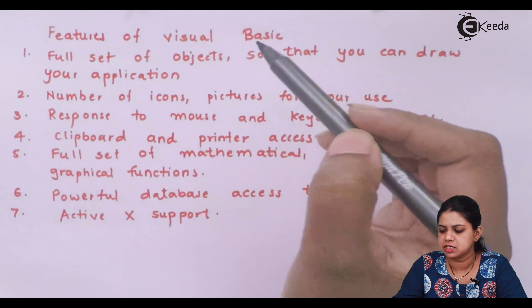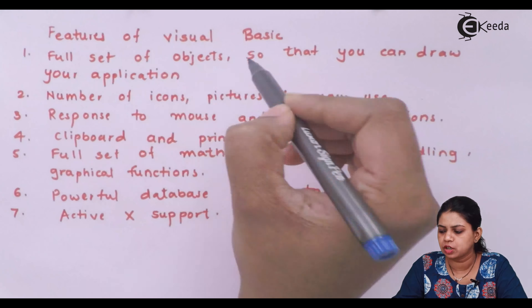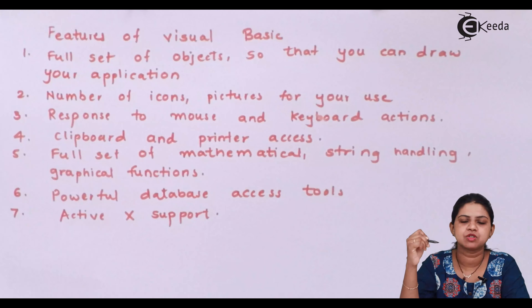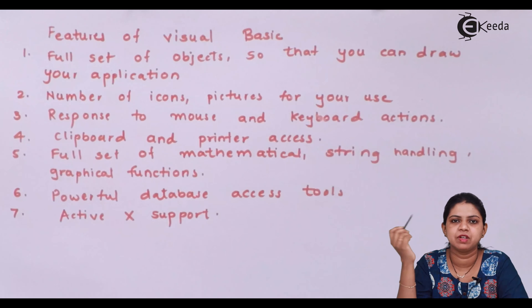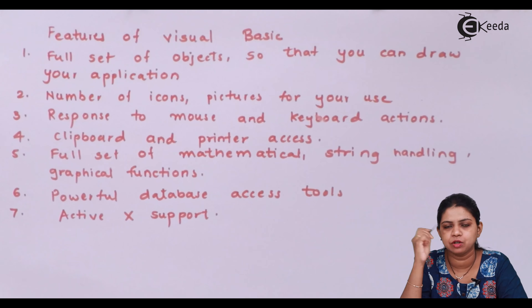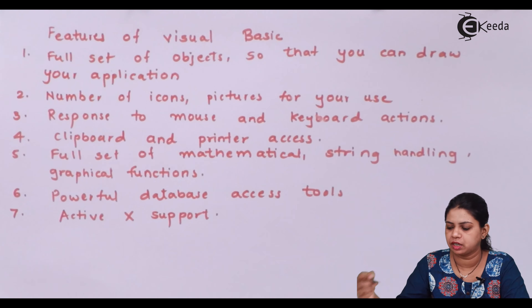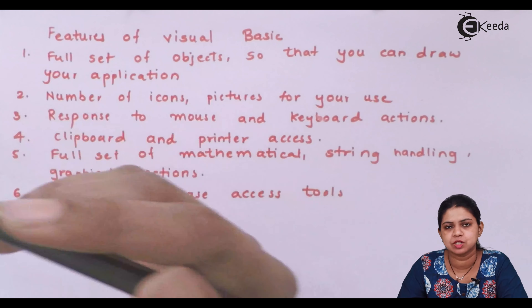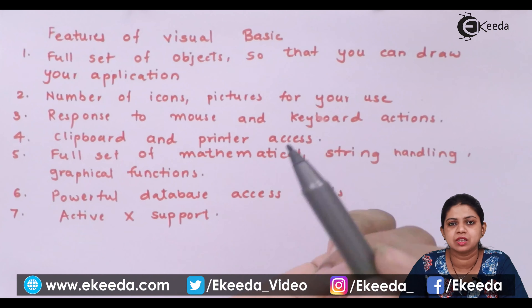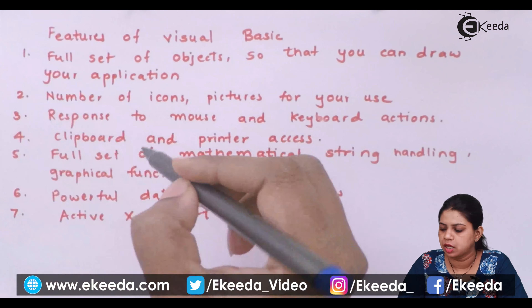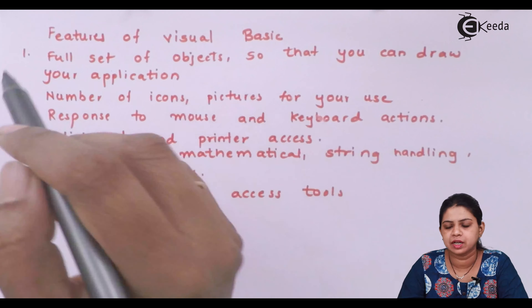The first feature of Visual Basic is a full set of objects, so that you can draw your application. It allows you to create a user interface using various tools like text box, label, command button, and check box. The number of icons and pictures available for your use is another feature. It also responds to mouse and keyboard actions — that's why it is called an event-driven programming language.